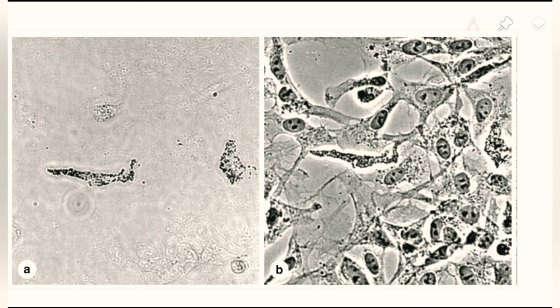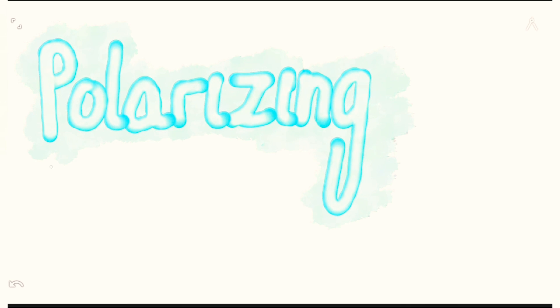Here we have an image: on the left is the image from a brightfield microscope showing an unstained preparation, and on the right is the image from a phase contrast microscope, also an unstained preparation. You can see the difference in the amount of contrast between them, and why the phase contrast microscope is very useful in studying unstained preparations.